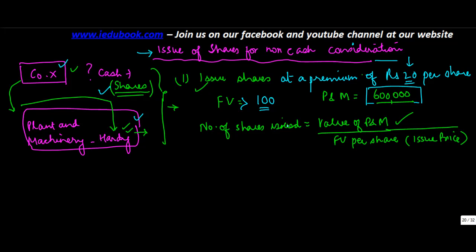So how many shares will be issued? The number of shares issued is going to be equal to plant and machinery's value divided by the issue price. It is not going to be the face value of the shares in this case. Why? Because the face value of the shares is not the price at which it is being issued.